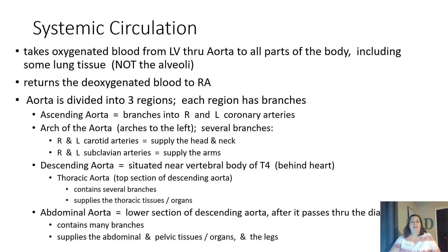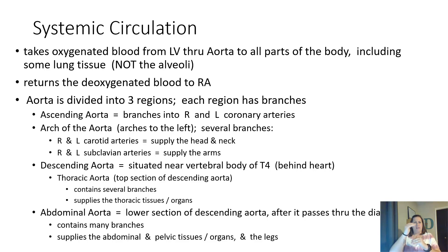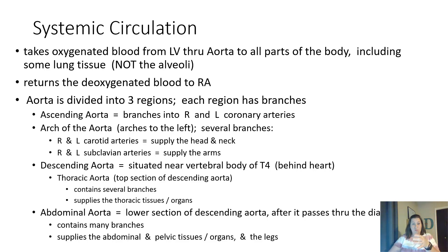The descending aorta is situated near the vertebral body of T4, thoracic vertebra 4, behind the heart. The thoracic aorta is the top section of that descending aorta and contains several branches supplying the thoracic organs with oxygen. The abdominal aorta is the lower section, passing through the diaphragm — that dome muscle has a hole it goes through — and it contains many branches supplying abdominal and pelvic tissues and organs, as well as delivering oxygen and nutrients to the legs.